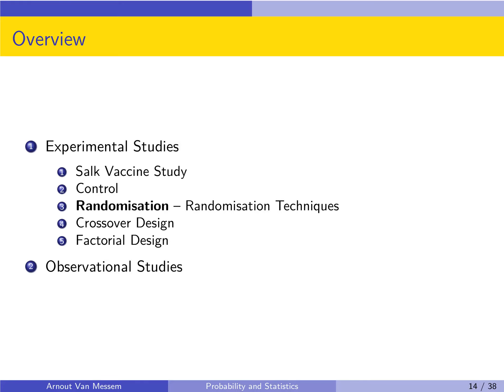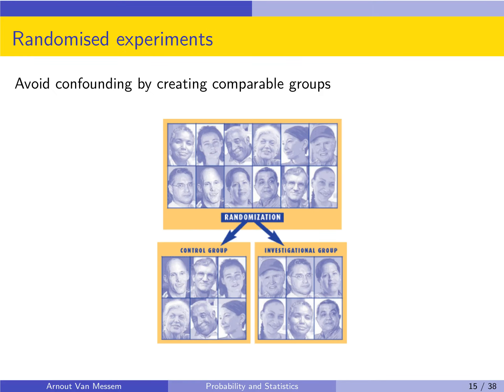In the previous part we saw that there was still a problem with the NFIP study. Luckily the problem was noticed and solved. The way the problem was solved was through randomization, by creating randomly two groups which are as comparable as possible.